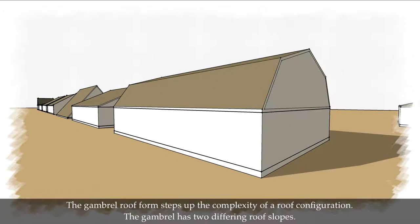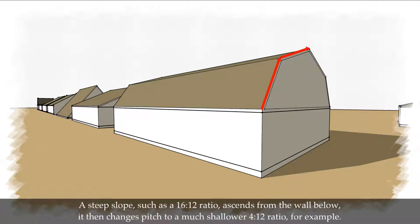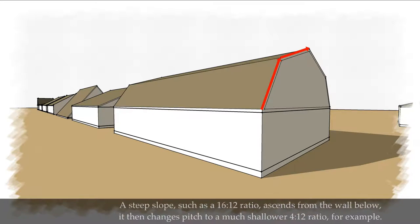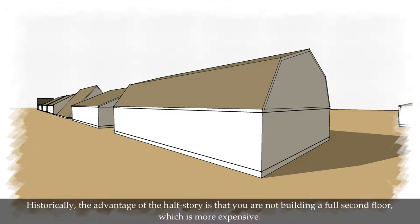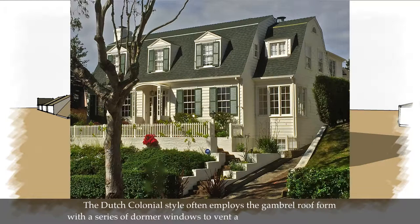The gambrel roof form steps up the complexity of a roof configuration. The gambrel has two differing roof slopes. A steep slope, such as a 16-12 ratio, ascends from the wall below. It then changes pitch to a much shallower 4-12 ratio, for example. The gambrel configuration allows a more spacious half story than a gable form. Also, the steep initial slope easily receives a dormer. Historically, the advantage of the half story is that you are not building a full second floor, which is more expensive. The Dutch colonial style often employs the gambrel roof form, with a series of dormer windows to vent and illuminate the half story.